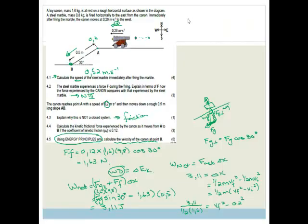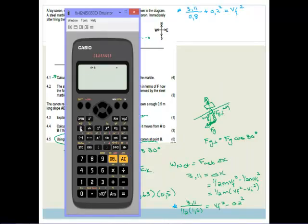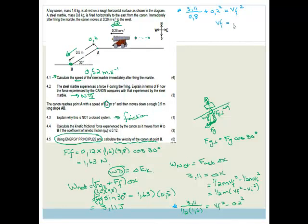So you've got 3.11 over half of 1.6, which is 0.8, plus 0.2 all squared is going to be VF squared. So let's pop that in our calculator. We've got 3.11 over 0.8 plus 0.2 all squared equals, and then we're going to square root of the answer immediately. So that becomes 1.98. The final velocity at the bottom of the hill is 1.98 meters per second. And there you go.